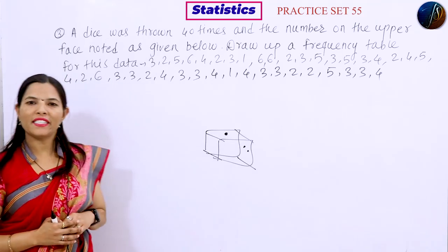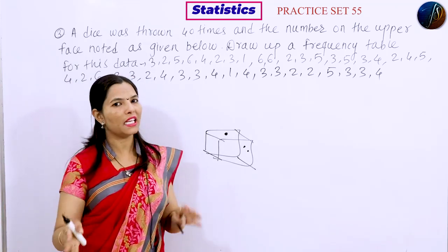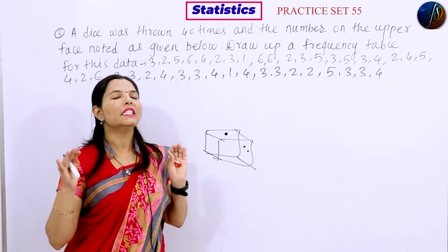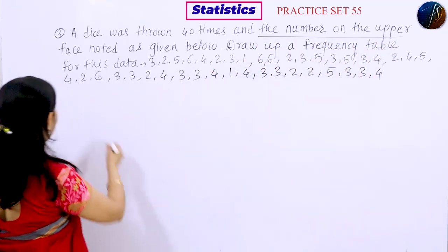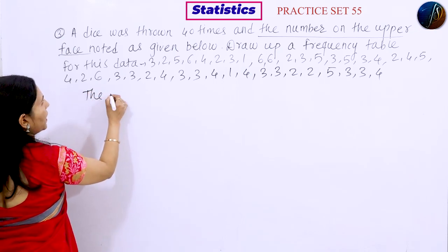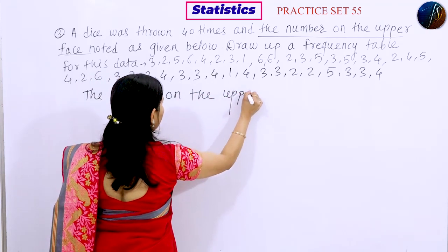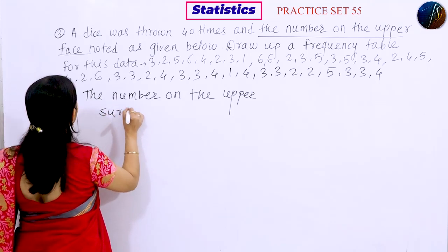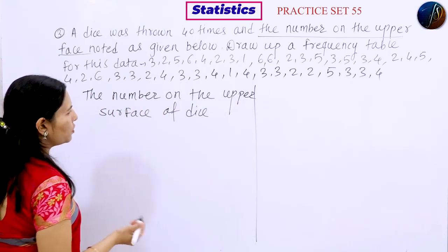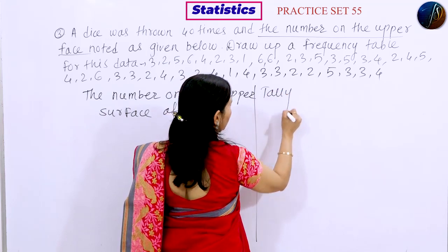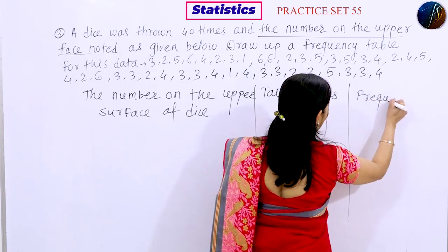Students, let's go. We have to prepare a frequency table. The first column is the number on the upper surface of the dice, the second column is the tally marks, and the third column as usual is the frequency.